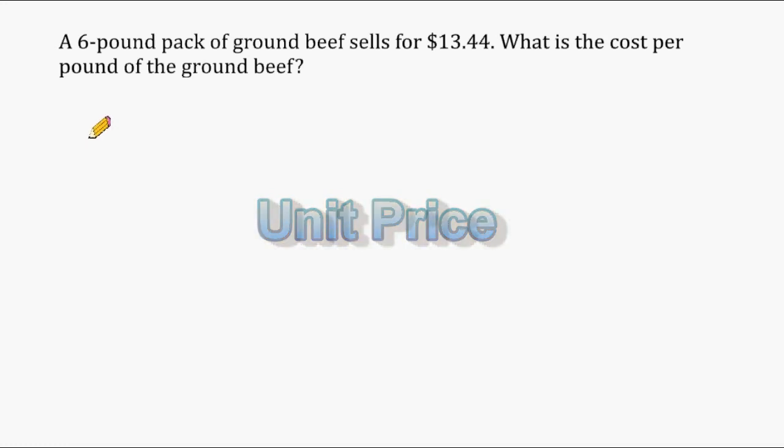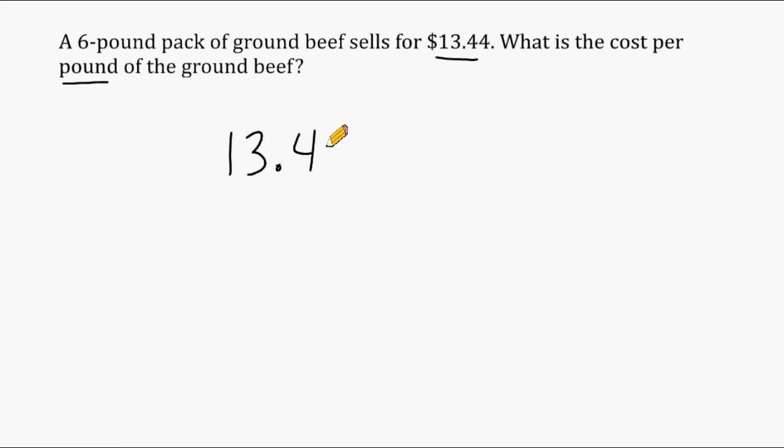This problem is saying that a six pound pack of ground beef sells for $13.44 and we have to determine the cost per pound of ground beef. Remember, whenever you are finding the unit price of something, it's going to be a division problem. So what we have to do is take the total price of $13.44 and divide that by the six pounds to see how much the ground beef would cost per pound.